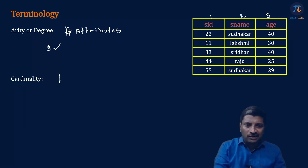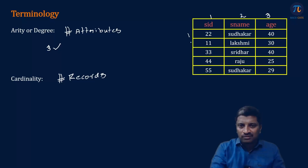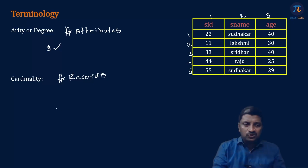The next one is cardinality. What is cardinality? The number of records of a relation is called cardinality. How many records do we have? One, two, three, four, five. So the cardinality of this relation is five.